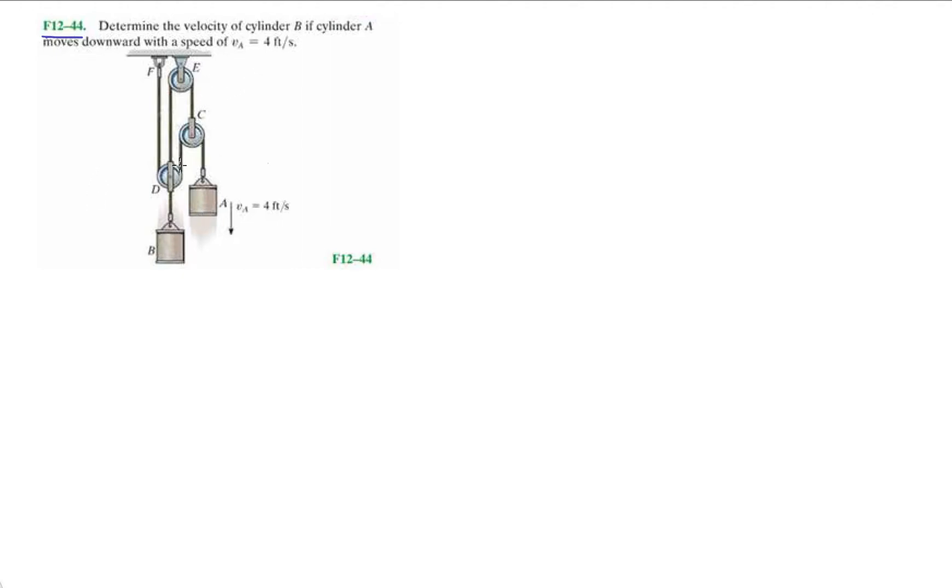So they're giving us a tougher one here because they're giving us one that has two strings. Okay, so we have this string here and then we have, let's put this one in green, and we have this string. So two ropes, two strings equals two equations. So we're going to have a system of equations.